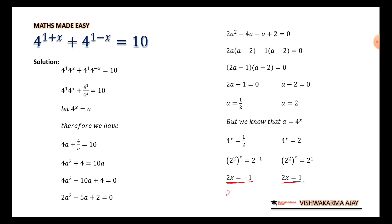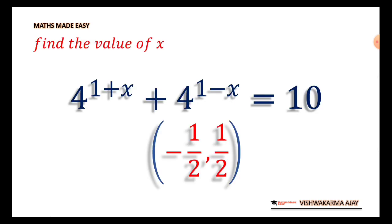So 2x = -1 and 2x = 1. Further, x = -1/2, x = 1/2. That's it. So these are the values of x for the given question.